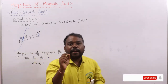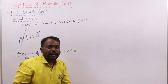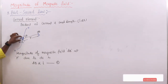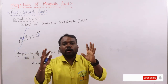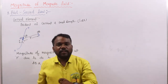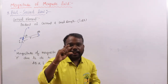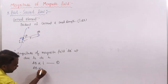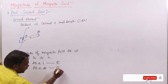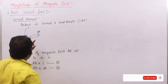The second factor is the length of the element dL. Smaller length gives smaller magnetic field; larger length gives larger magnetic field. So dB is directly proportional to dL. The third parameter is theta, the angle between the position vector R and the length vector dL. This angle affects dB with a sine function, so dB is directly proportional to sine theta.